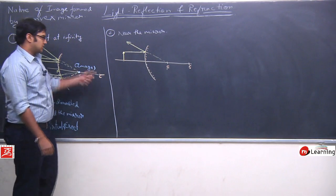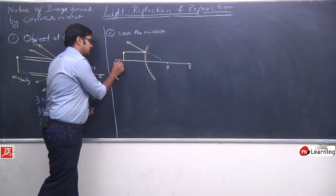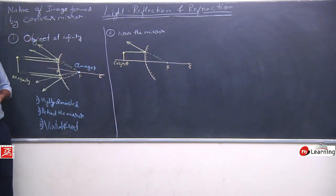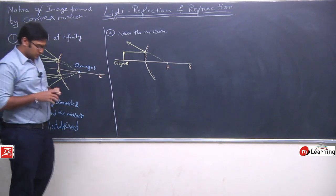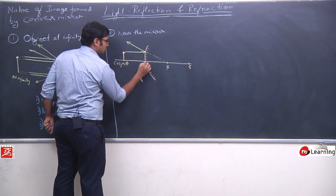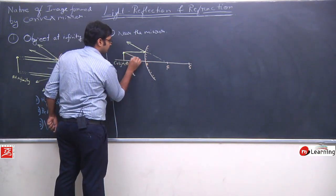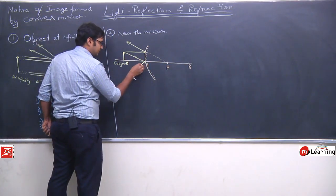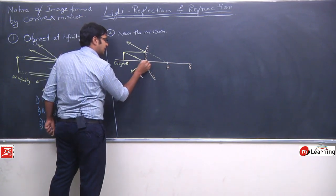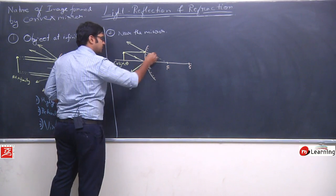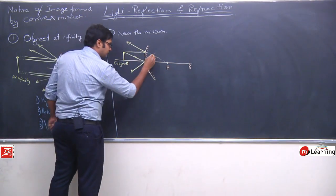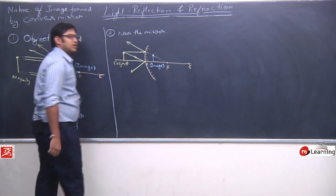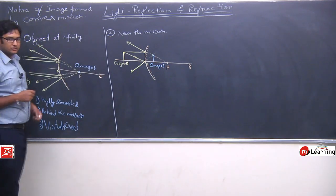This is your convex mirror. This is focus, and same distance here - this is center of curvature. Just imagine where we can place the object. We place the object here. It doesn't matter whether I place it here or there - the difference is only finite vs. infinite. A light ray striking the mirror in parallel will reflect such that it appears to pass through the focus - it will reflect something like this. This is your object.